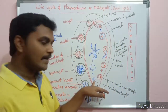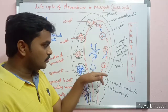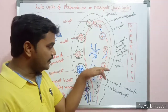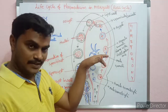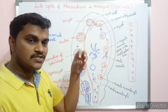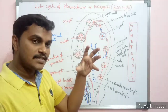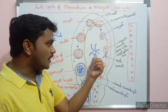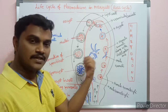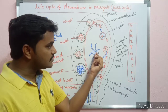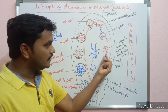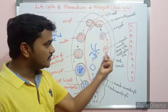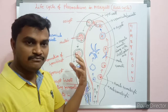The microgametocyte contains the male gamete. The male gamete has one nucleus — one unit with one nucleus. Then eight daughter nuclei are formed by division. These eight daughter nuclei, along with cytoplasm, form flagella-like structures. Each daughter nucleus enters into one flagellum. These flagella are also called male gametes, and they detach from the microgametocyte — this phase is called exflagellation.